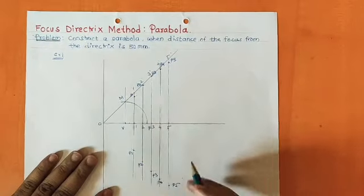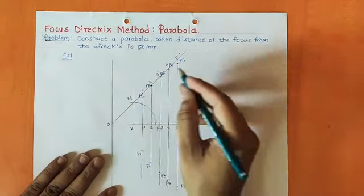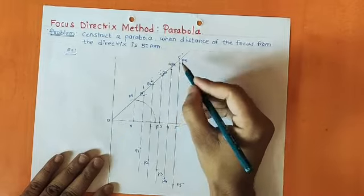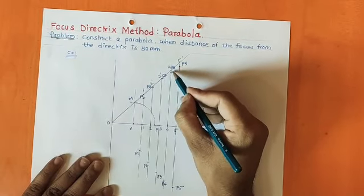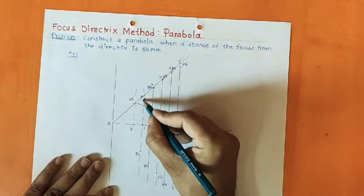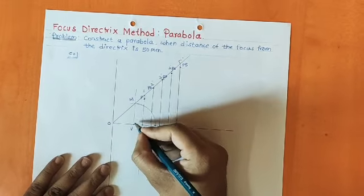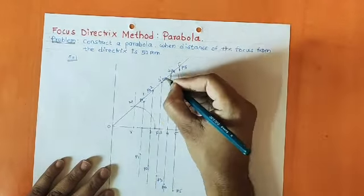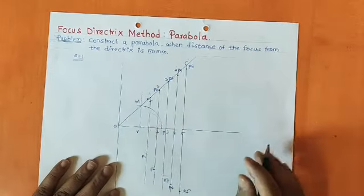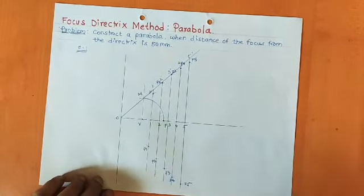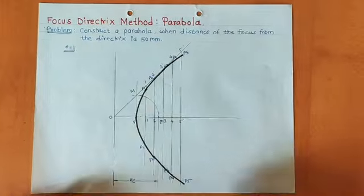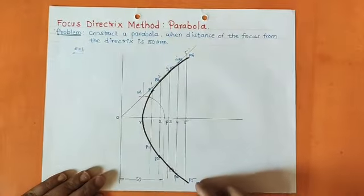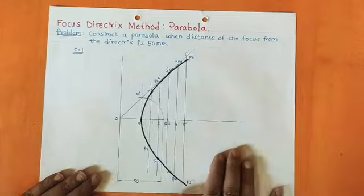All points from P1 to P5 are now marked above the axis and below the axis. Joining all these points, draw a smooth curve. Your smooth curve will go P5, P4, P3, P2, P1, then pass through vertex V, then P1, P2 up to P5. Joining all these points with a smooth curve gives your final parabola. As you can see, passing through all these points I have drawn a smooth curve and completed the problem.